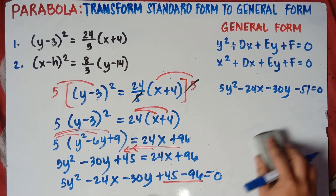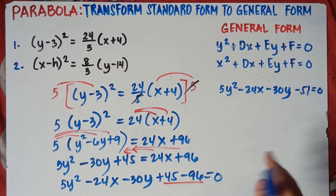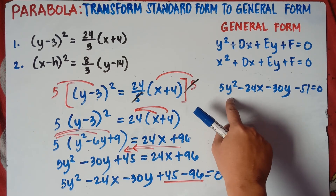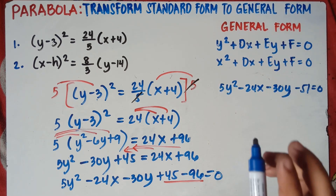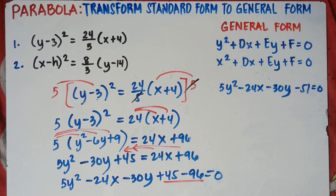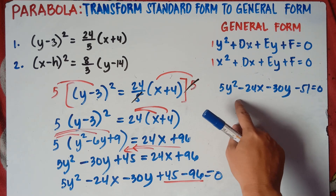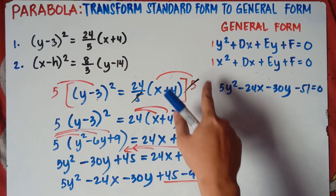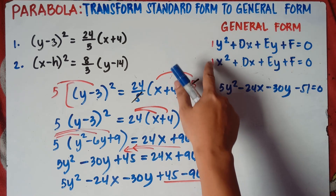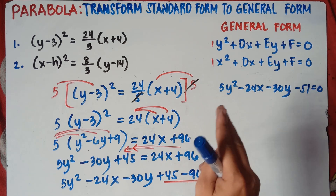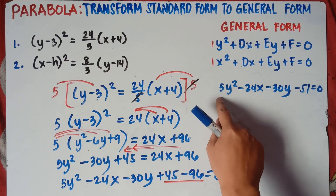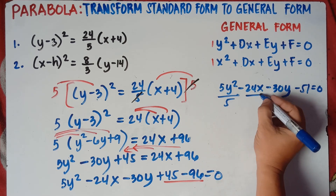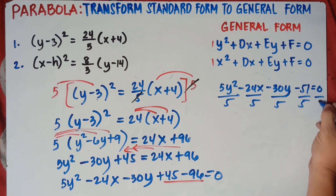So we have 5y squared minus 24x minus 30y minus 51 equals 0. But we need to follow the general form format: y squared plus Dx plus Ey plus F equals 0, where the coefficient of y squared is 1. The number before y squared in our equation is 5, so we need to divide the entire equation by 5 — because 5 divided by 5 is 1.